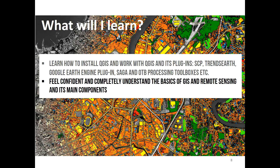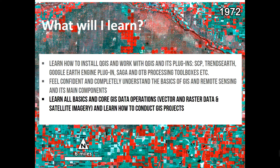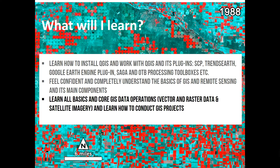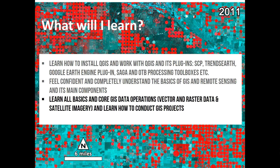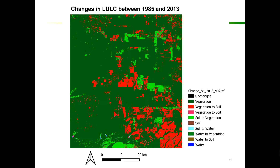You will also feel confident and completely understand the basics of GIS and remote sensing and its main components. You will learn all core GIS data operations — vector and raster data as well as satellite image analysis — and also learn how to conduct GIS projects. Additionally, you will learn how to visualize GIS and spatial data and how to produce GIS maps for your reports, and much more.